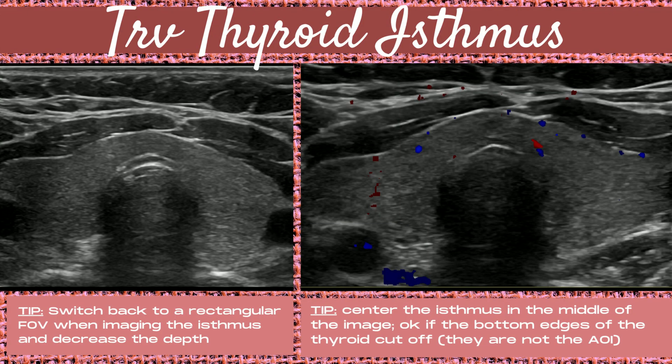Next, moving on to the transverse thyroid isthmus — this is the section of the thyroid that connects the lobes to one another. Switch back to a rectangular field of view when imaging the isthmus and also decrease your depth. Center the isthmus in the middle of the image. It's okay if the bottom edges of the thyroid are cut off, because the isthmus is now the area of interest — make that the star of your image.